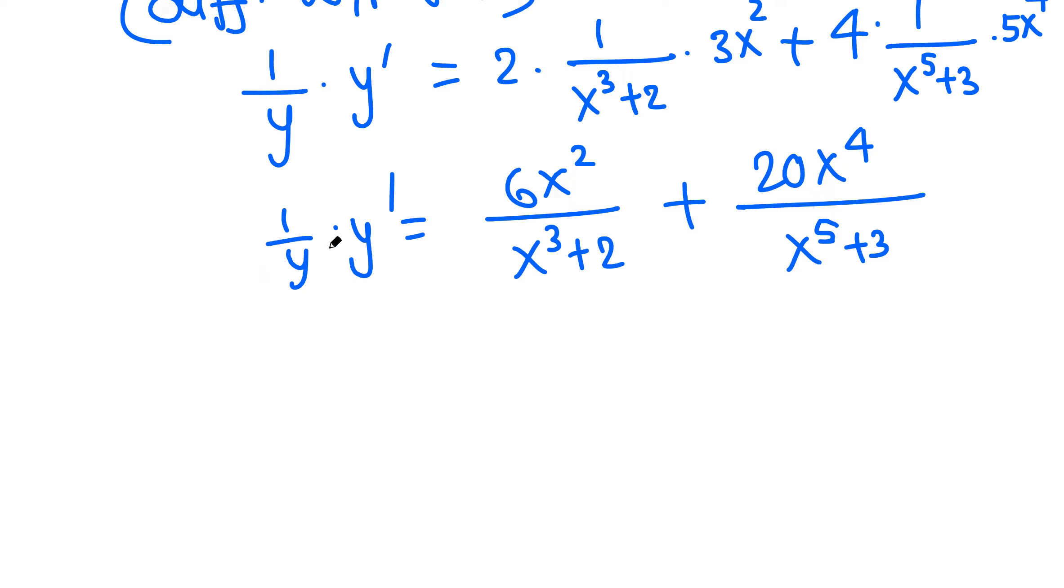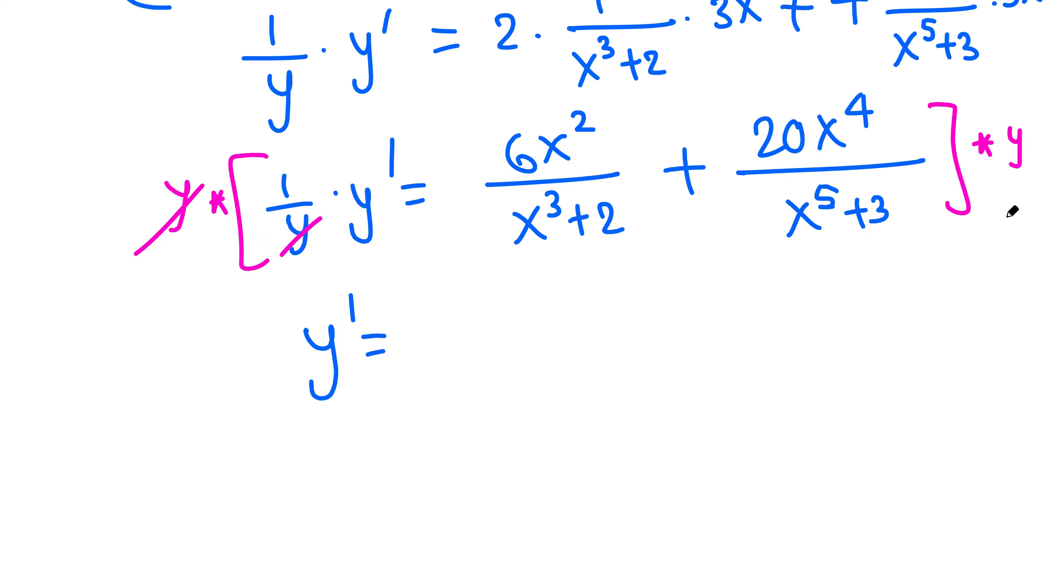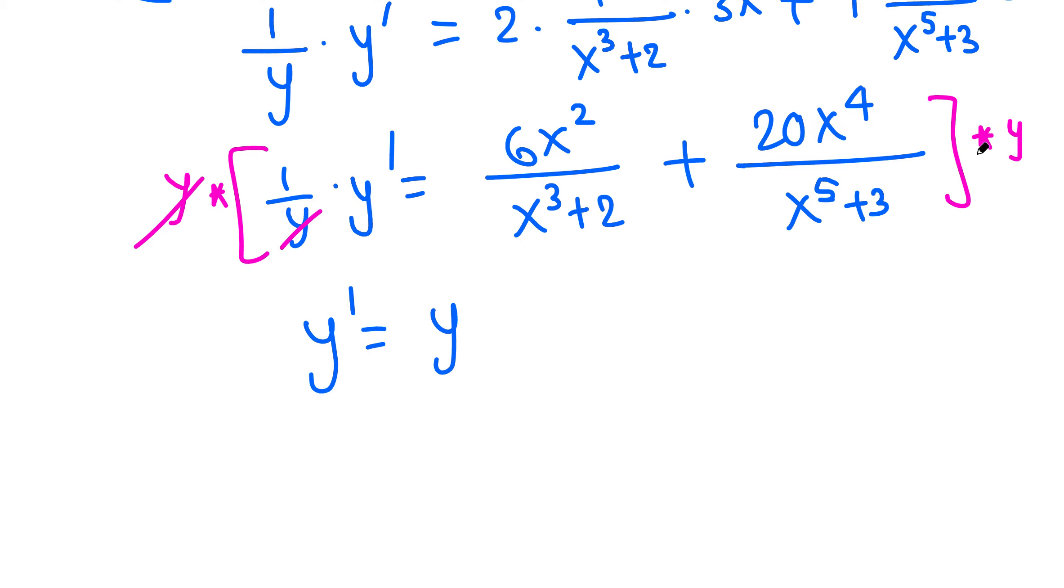We multiply the left-hand side as well as the right-hand side—maybe we can write here as well. That makes y vanish from the left, so that leaves y prime, which is what we are looking for. Now y times everything on the right-hand side, so I'm gonna write y here: y times this whole thing.